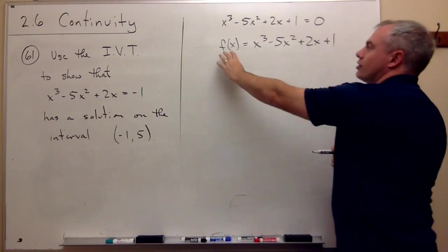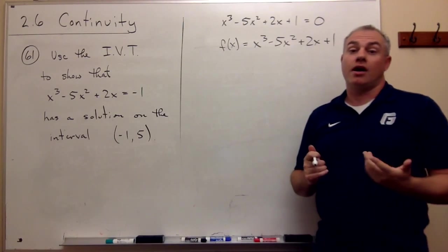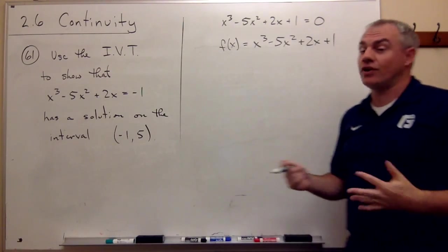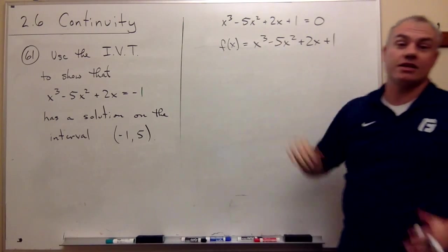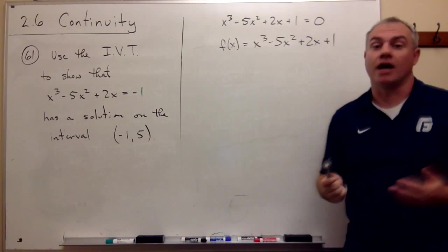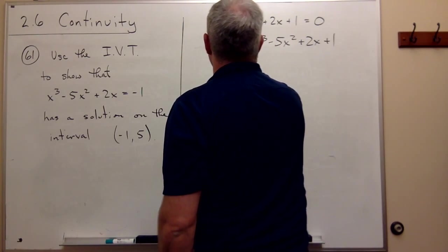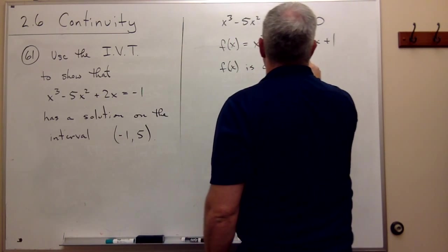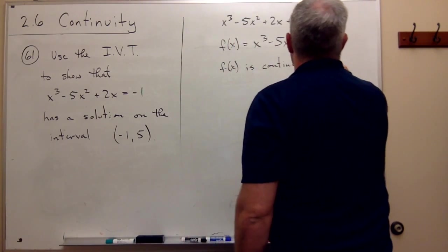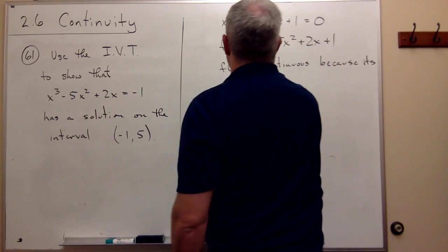So first question, is this a continuous function? Yeah, it's a continuous function. How do we know? Because polynomials are continuous functions. So f of x is continuous because it's a polynomial.